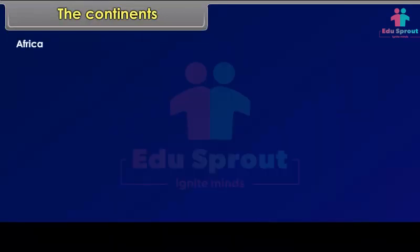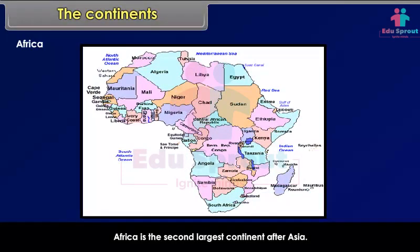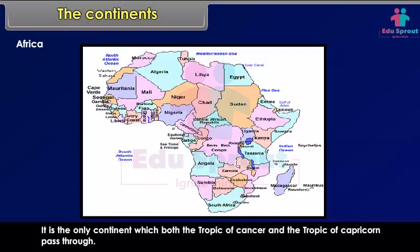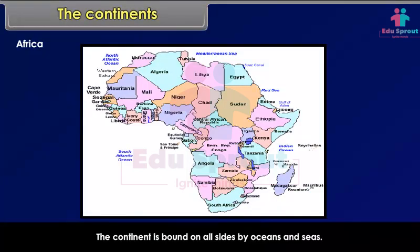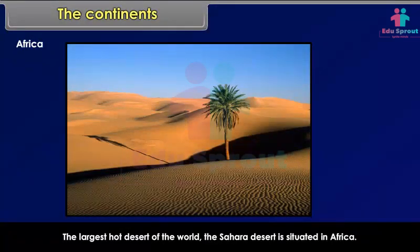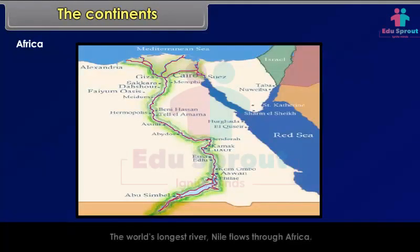Africa is the second-largest continent after Asia. The Equator runs almost through the middle of this continent. The wider part of Africa lies in the Northern Hemisphere. It is the only continent through which both the Tropic of Cancer and the Tropic of Capricorn pass. The continent is bound on all sides by oceans and seas. The largest hot desert of the world, the Sahara Desert, is situated in Africa. The world's longest river, the Nile, flows through Africa.